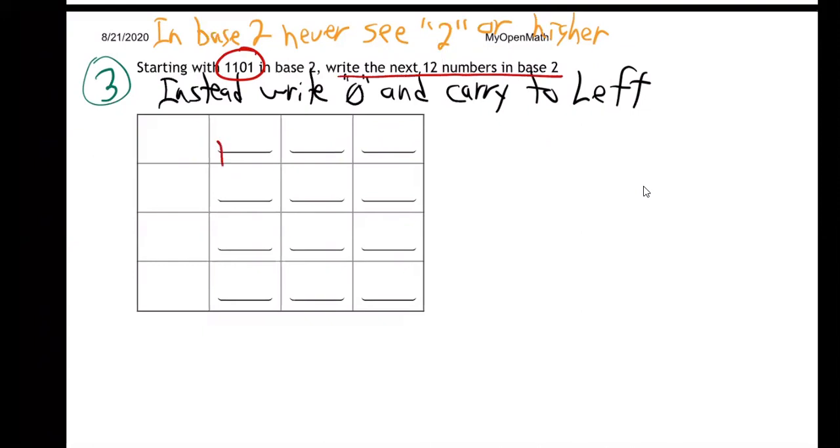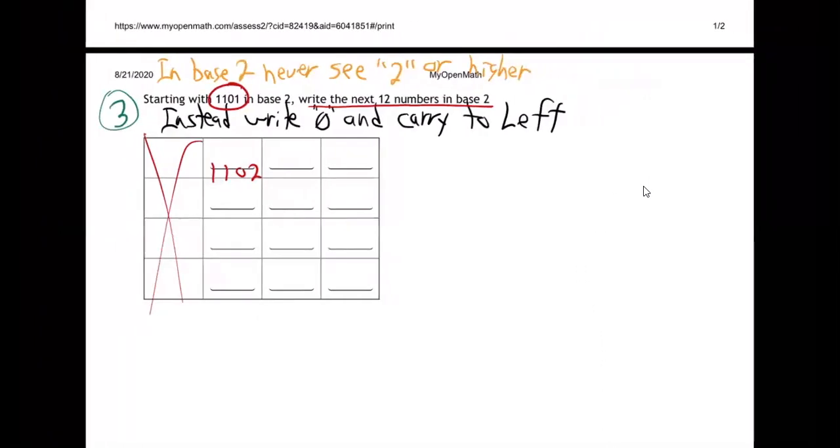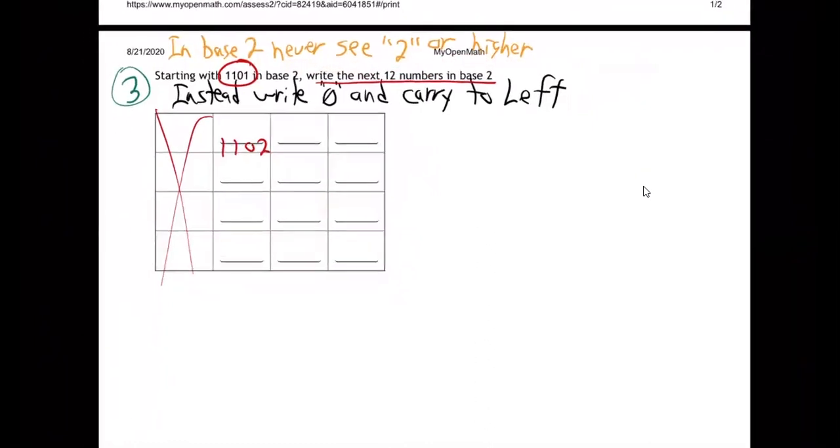You know, 1101 is 1102. Let me space it out a little bit better. 1102. Again, we don't use these, just the 12 blanks. So 1102. But hold on. Hold on. We're never going to see a 2 or higher. So I can't have that 2, can I?